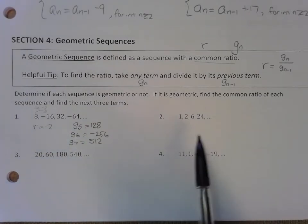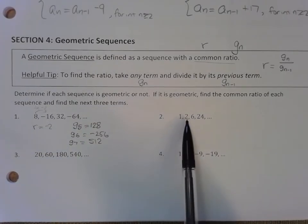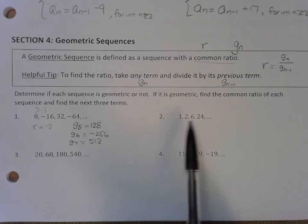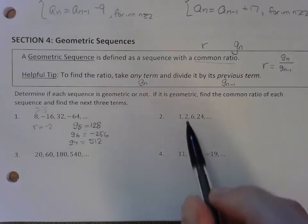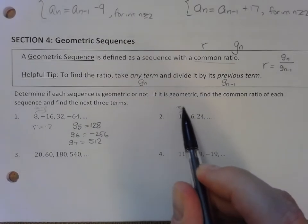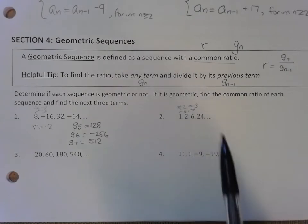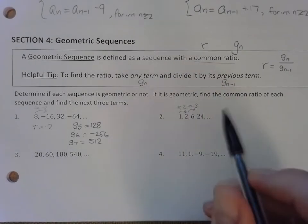Exercise 2 is to the right. If I divide 2 by its previous term, 1, I get a ratio of 2. If I divide 6 divided by 2, I get 3. Since I'm multiplying by different numbers, this doesn't have a common ratio. The ratio is changing.